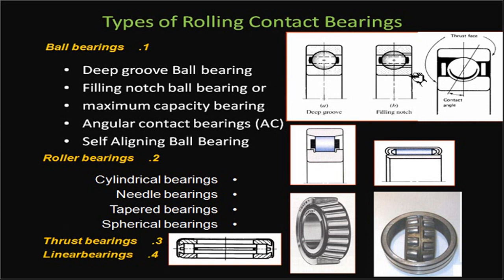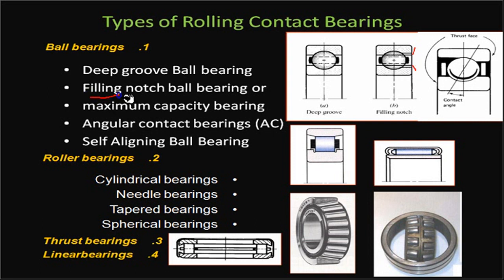If we consider the filling notch type ball bearing, an additional notch is provided on both sides of the groove to allow more balls to be inserted, increasing the load-carrying capacity. This is therefore also called the maximum capacity bearing.